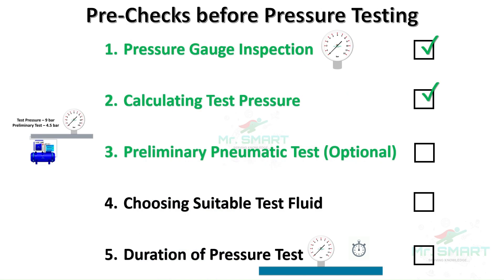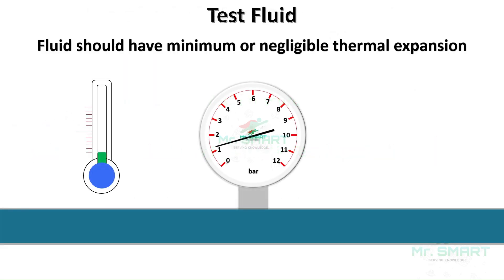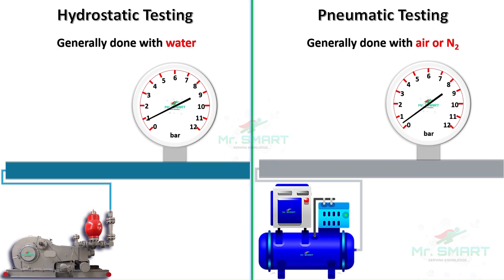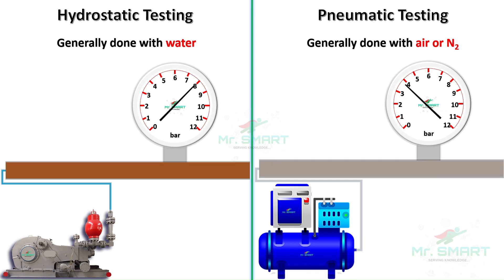After the preliminary pressure test, it is important to choose a suitable test fluid. When selecting a test fluid, choose one with low thermal expansion to minimize the effect of temperature changes on pressure readings. Generally, water is used as the testing fluid for hydrostatic pressure testing, while air or nitrogen is used for pneumatic pressure testing.